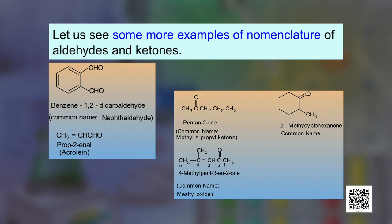Some more examples of nomenclature of aldehydes and ketones are given here. One structure contains 2 CHO groups and is named accordingly. You can browse these further examples of nomenclature.